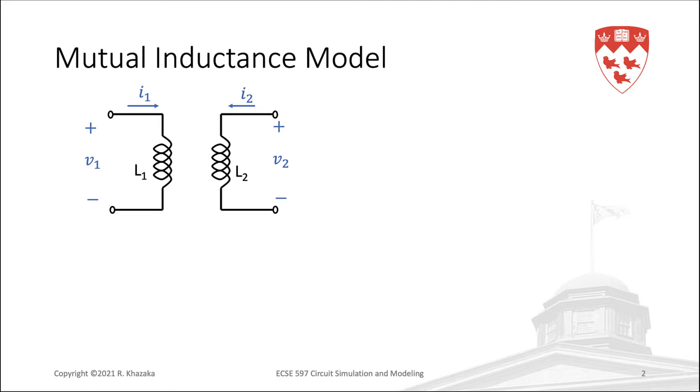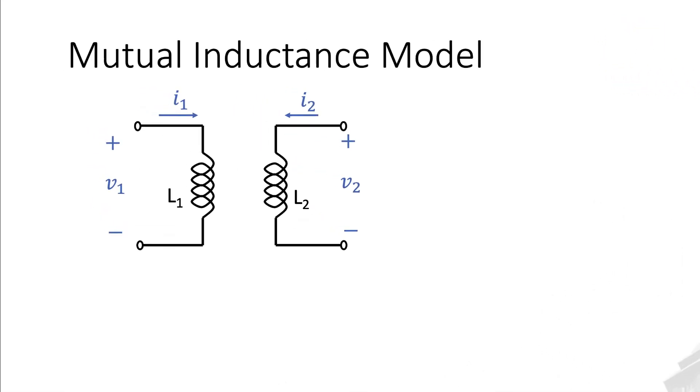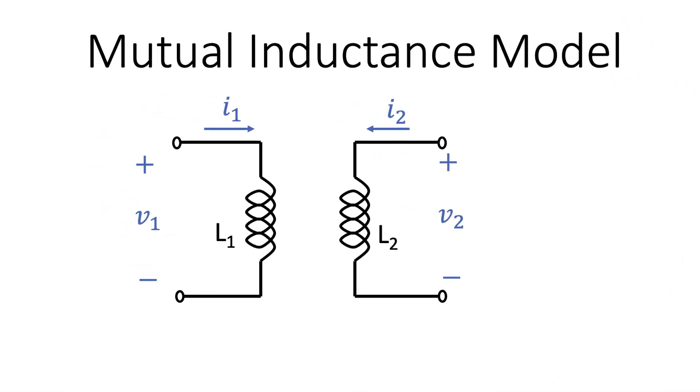Before we do that, however, let us review the model that we are going to use for mutual inductance. Let's say we have these two inductors, L1 and L2. If there is no coupling between them, we can write the simple inductor model for each of them.